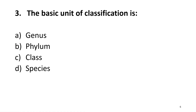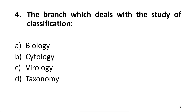Question 3: The basic unit of classification is called species. Species is the basic unit of classification — the right answer is delta. Question 4: The branch which deals with the study of classification is called taxonomy. The right answer is delta.